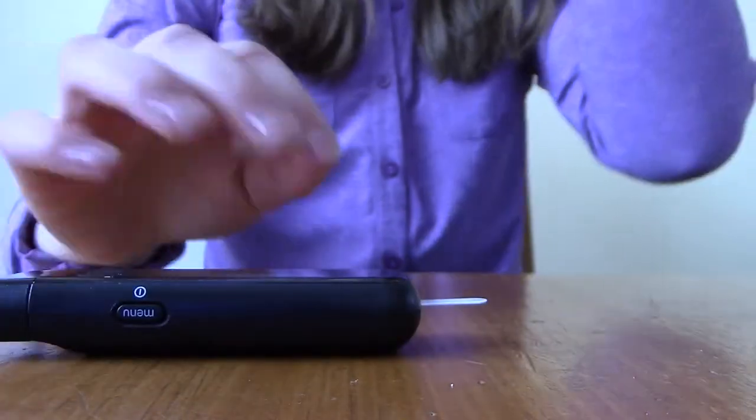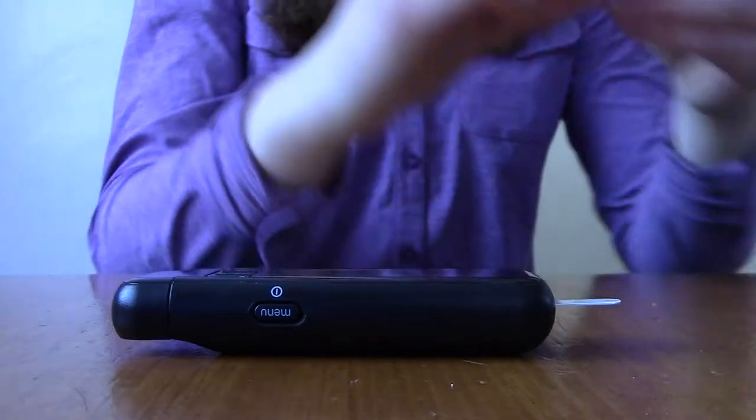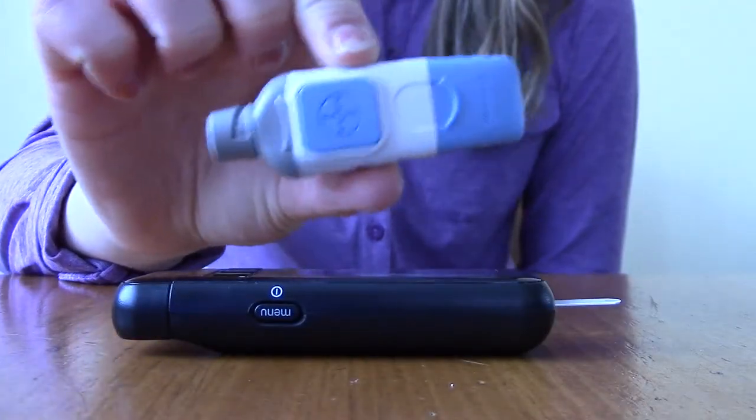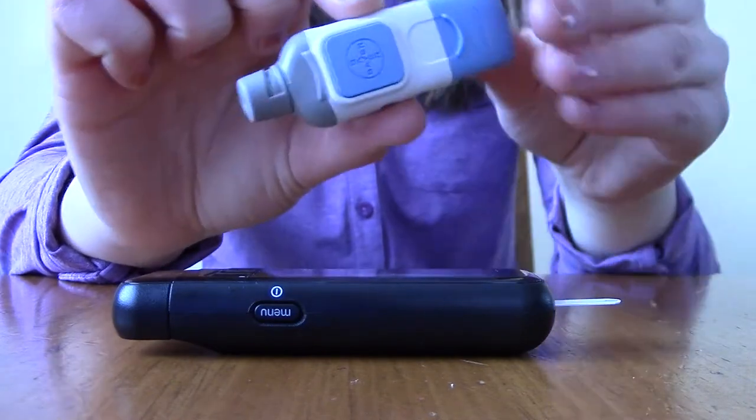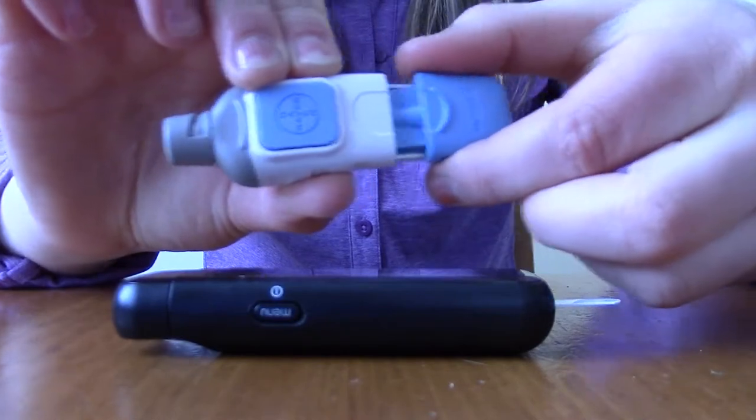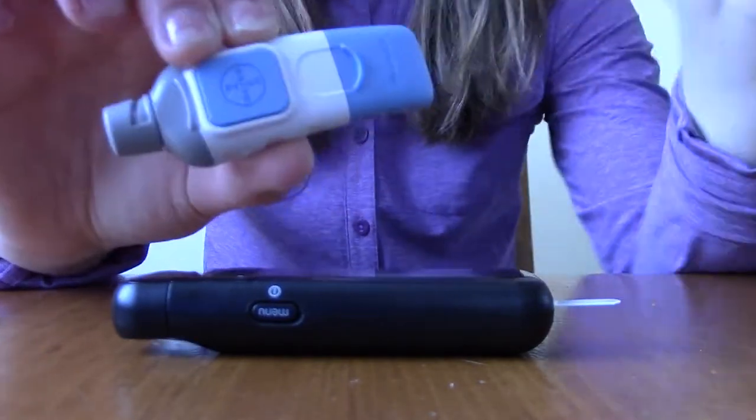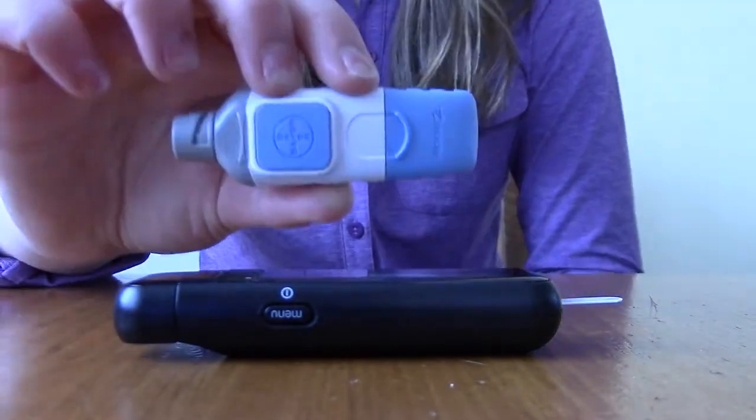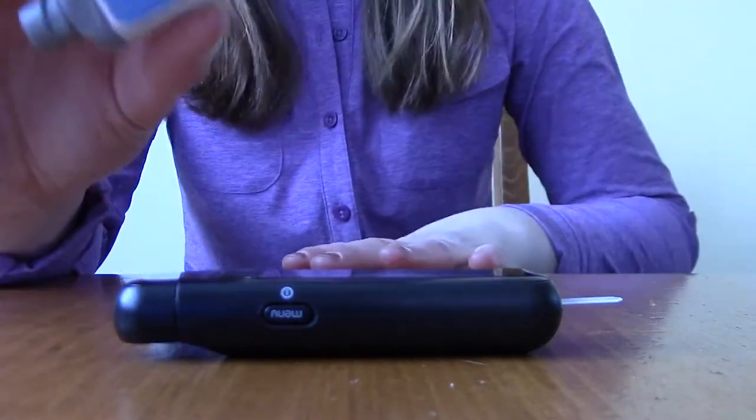Alright, so next I need to take my lancet. This right here is what's going to poke into my finger and make the blood come out. In order to prime it—or pump it back—for mine I just pull it back, but keep in mind that each lancet device is different depending on the company.